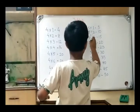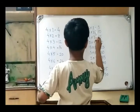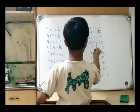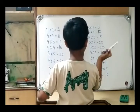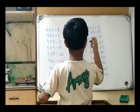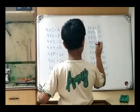5 1s are 5, 4 2s are 10, 5 6s are 50, 5 4s are 20, 5 5s are 25.